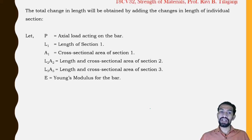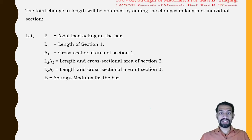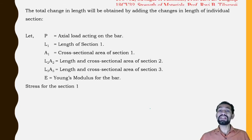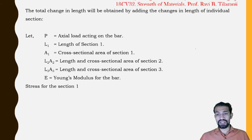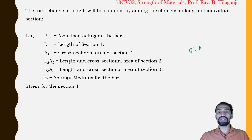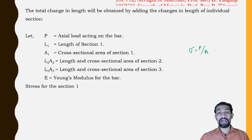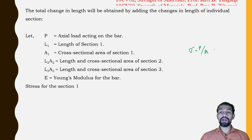E is Young's modulus for the bar, which is constant if the same material is used for all sections. If not constant, we consider E1, E2, E3 as the Young's modulus for sections 1, 2, and 3 respectively. For stress, we know that σ = P/A — stress equals load divided by cross-sectional area.